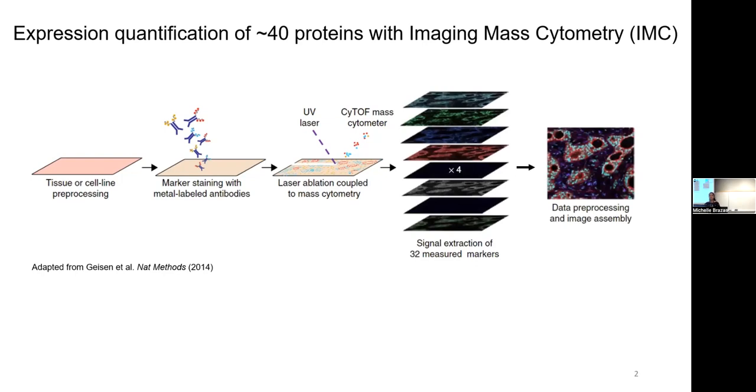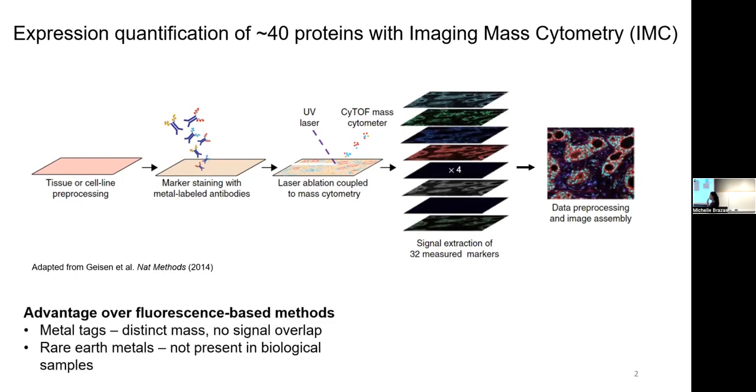A couple of advantages of using such a technology over fluorescence-based methods are these metal tags that since these have distinct mass, it allows us to quantify so many proteins at the same time since they have very little signal overlap in comparison to, for example, fluorophores that often have a lot of overlapping signals.